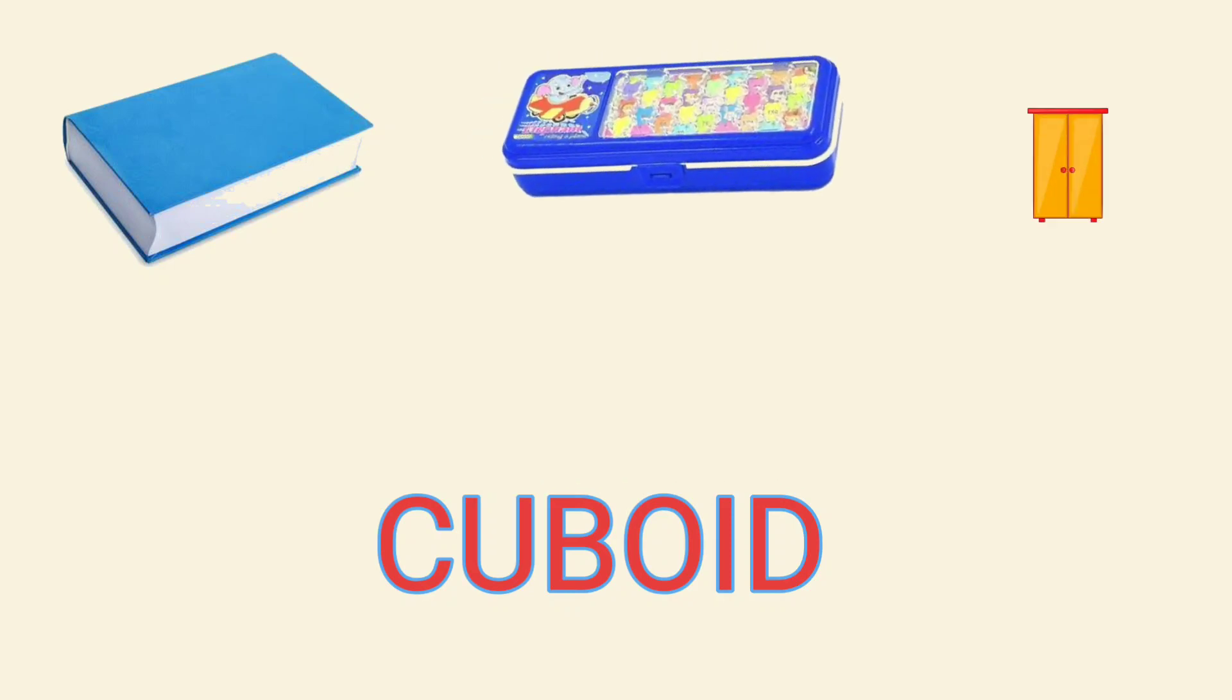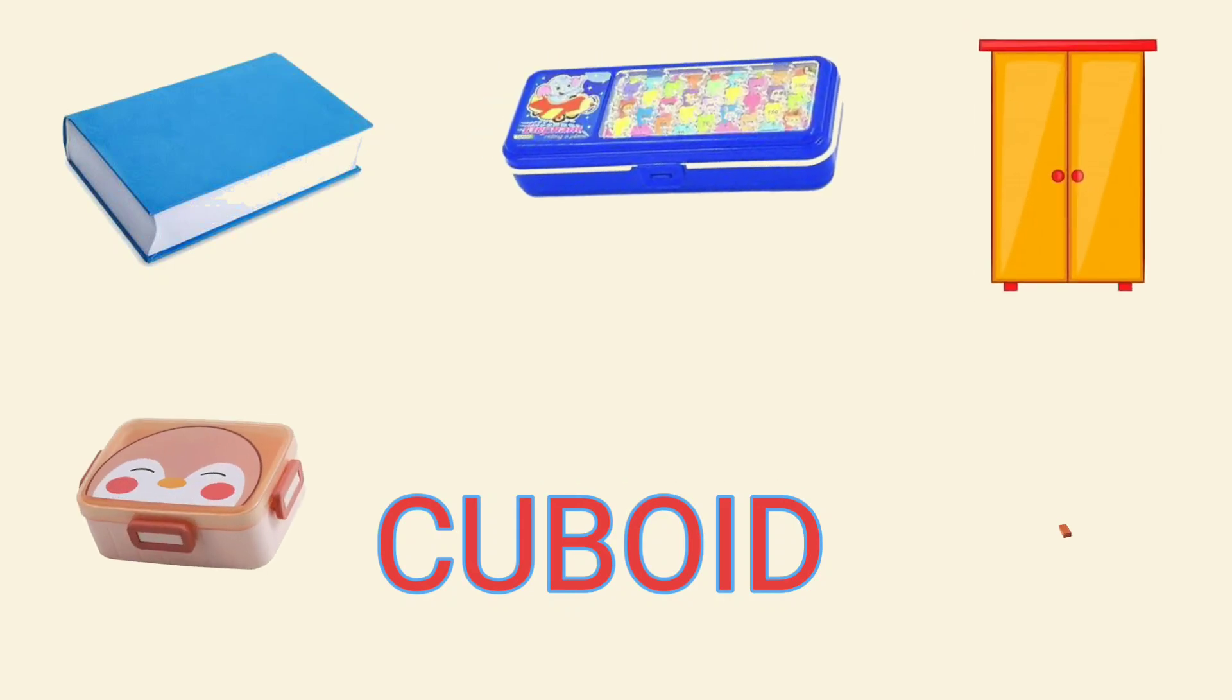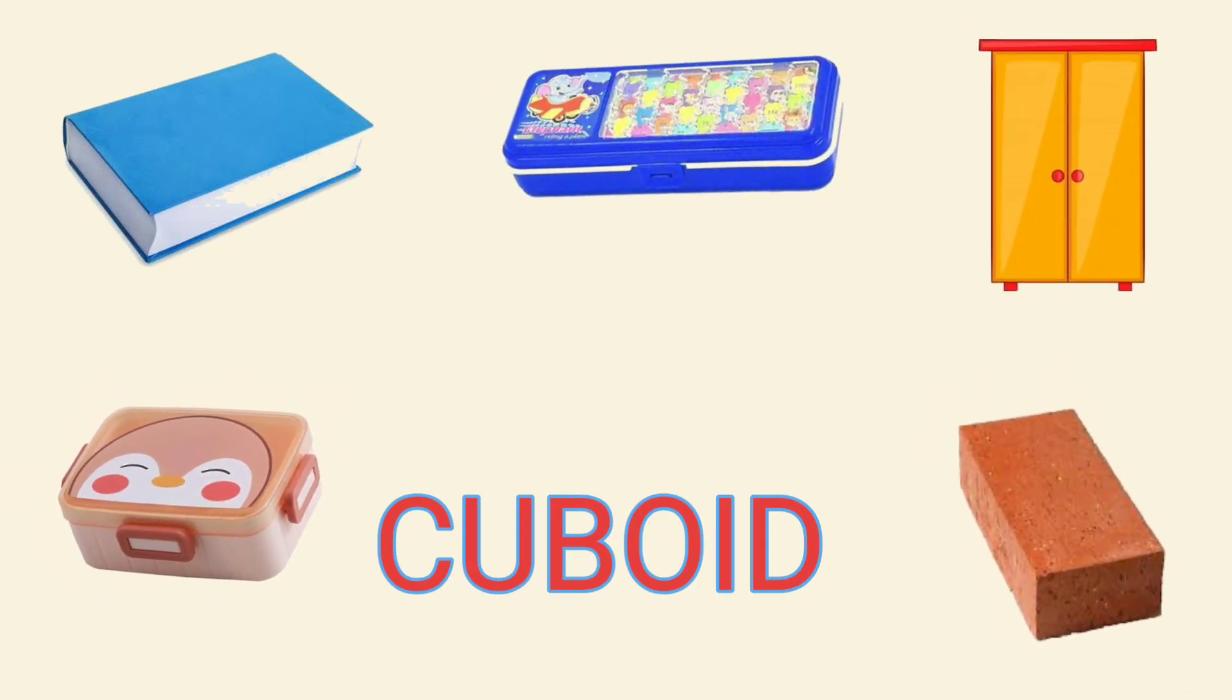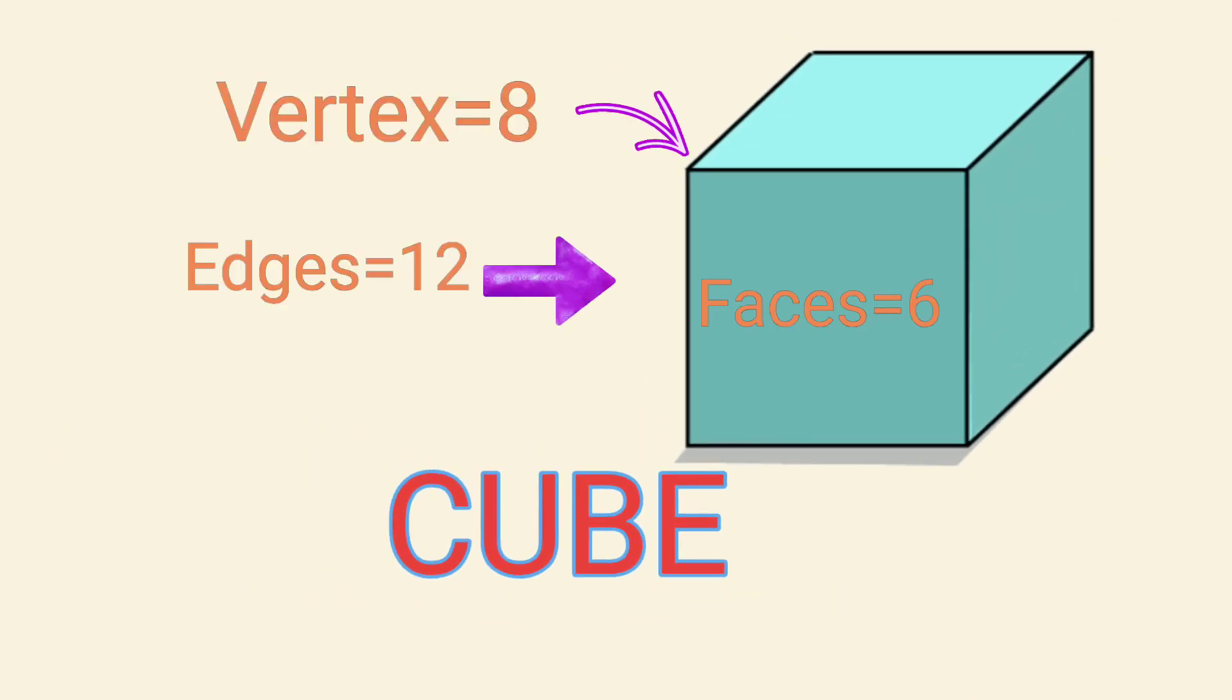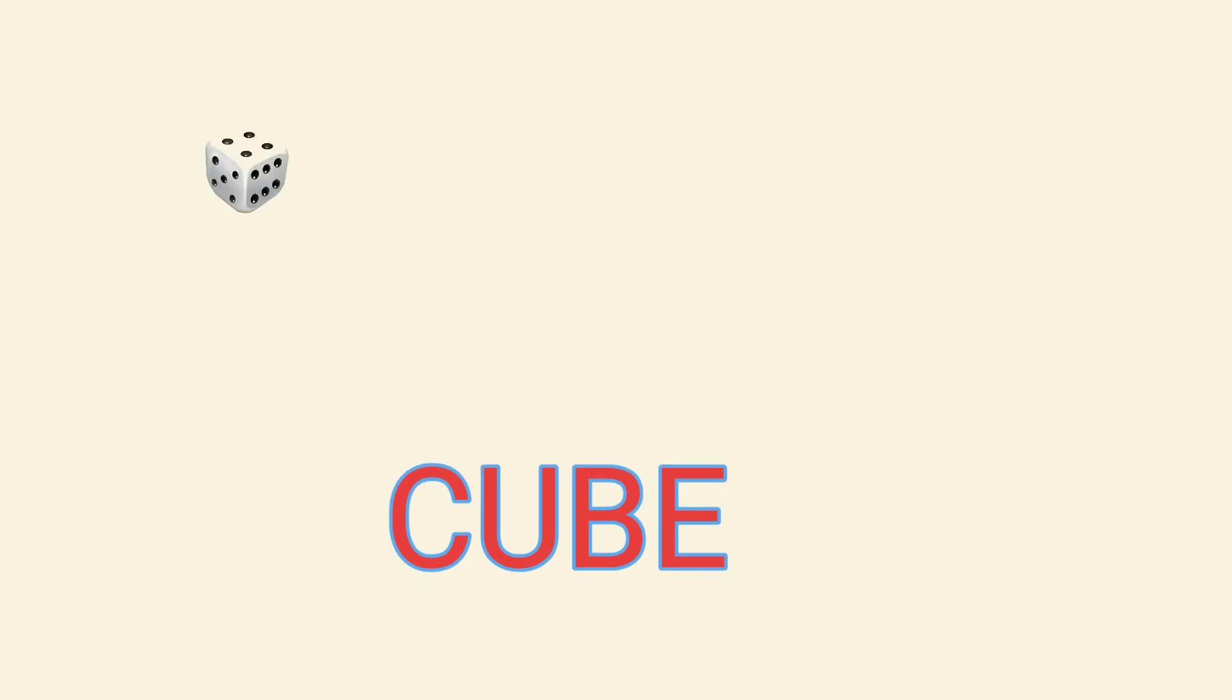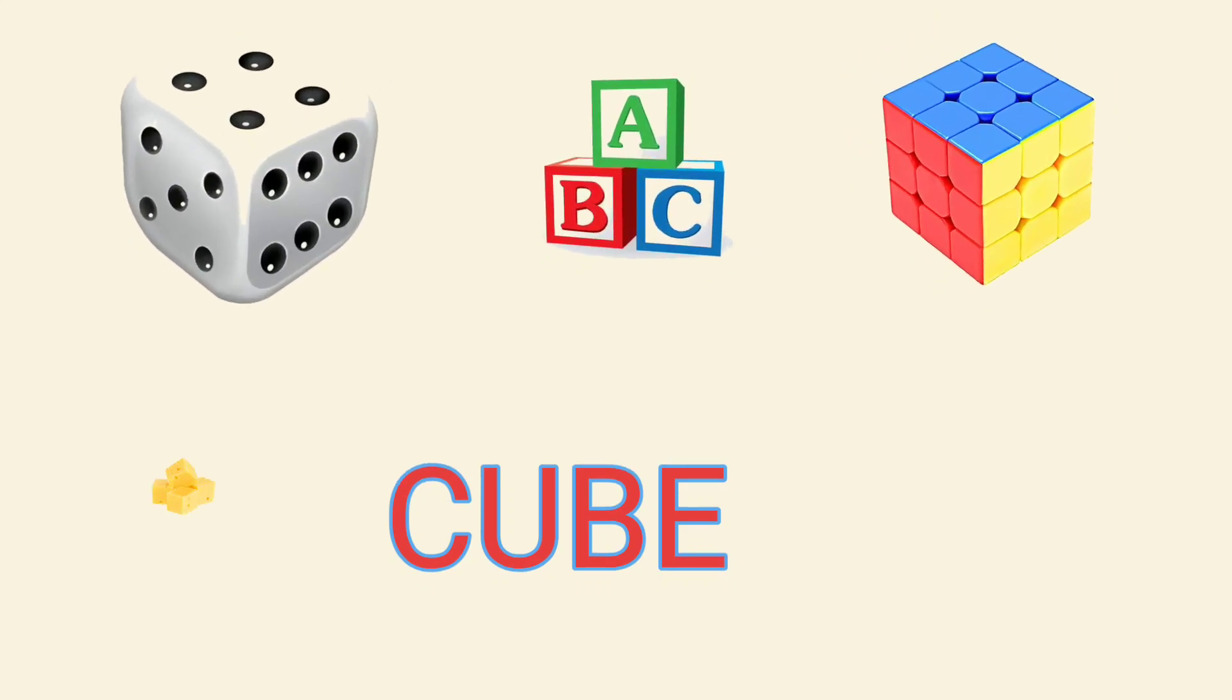Examples of cuboids include books, pencil boxes, cardboard boxes, and bricks. Cube: A cube has six square faces, eight vertices, and 12 edges. Examples include dice, blocks, and Rubik's cubes.